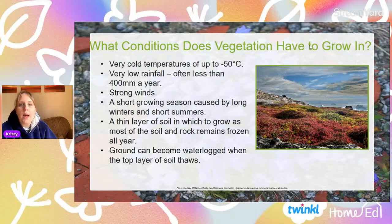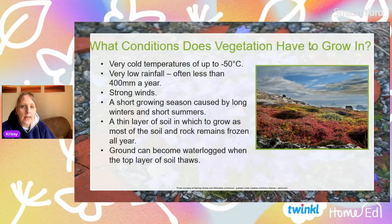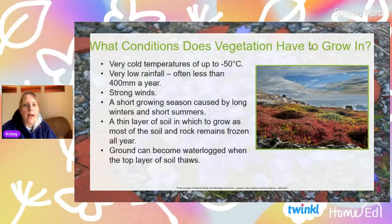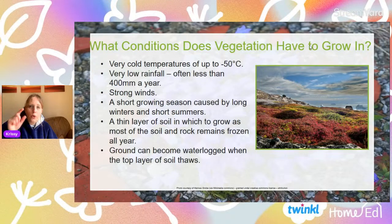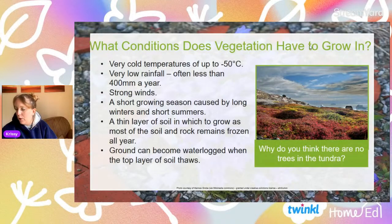So we're looking at a place with very cold temperatures — often minus 50 — very low rainfall, strong winds, and very short growing seasons, where you've got this thin layer of soil. And another thing: this thin layer of soil, if it's been covered in an ice sheet over winter, can actually become really waterlogged because it holds a lot of water in that top layer. So this is really quite extreme conditions for anything to grow in: very cold, very low rainfall, strong winds, a thin layer of soil with everything underneath frozen solid, and potentially waterlogged on top.